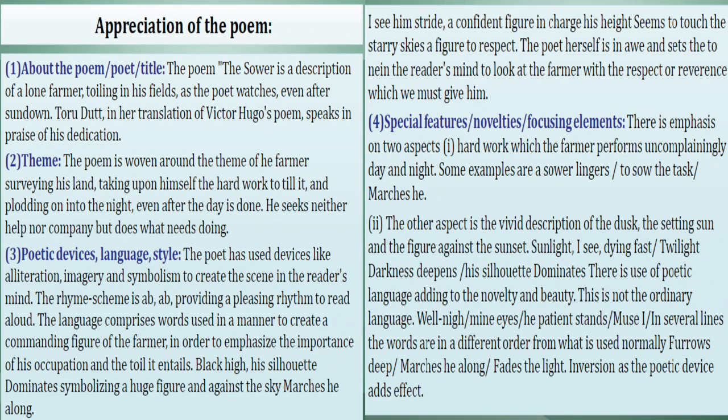About the poem, poet, or title, we have to comment first — the poem is originally written by Victor Hugo and translated by Toru Lata Dutt. Then, what is the theme of the poem? The poem describes the plight of the farmer and the activities related to farming. Then, the poetic devices, language, and style used in the very poem — the poem is well-versed and follows a rhyming scheme. The rhyming scheme goes in the pattern of ABAB, and then it gets repeated. The poem carries personification, alliteration, repetition, and antithesis.